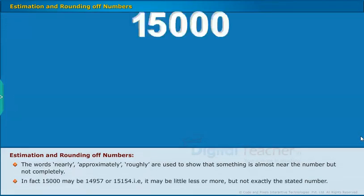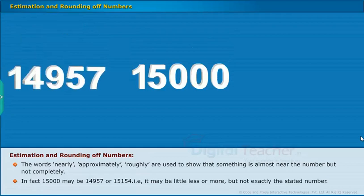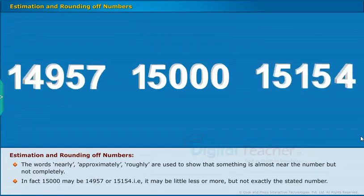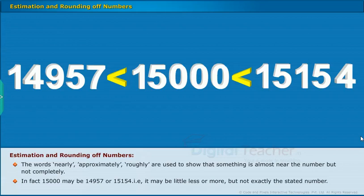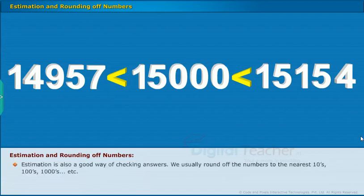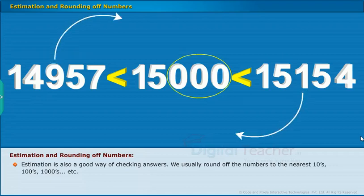In fact, 15,000 may be 14,957 or 15,154. That is, it may be little less or more, but not exactly the stated number. Estimation is also a good way of checking answers. We usually round off the numbers to the nearest tens, hundreds, thousands and so on.